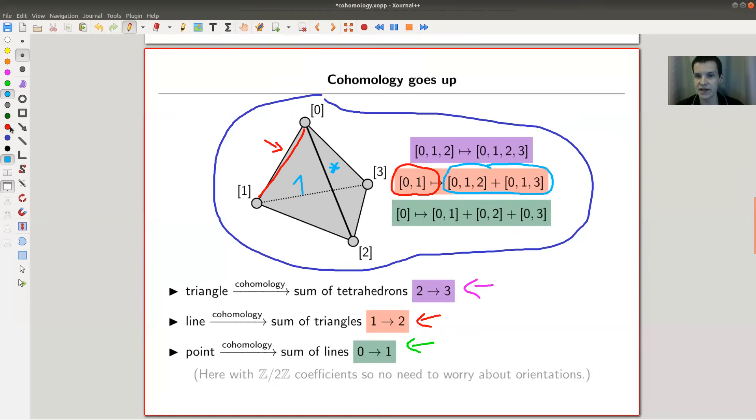Similarly, you can associate faces or triangles to the tetrahedron. In this case, there's only one tetrahedron. So all would map to the same tetrahedron. And you can associate a point to all the lines where it lives in. So here's an example. The point zero lives in three lines, the line 0, 1, the line 0, 2, and the line 0, 3. And you can call that a coboundary map.